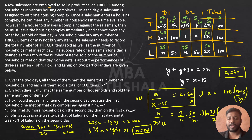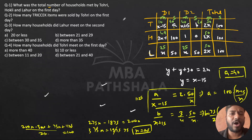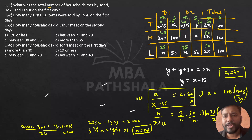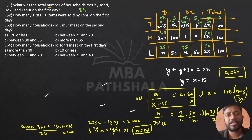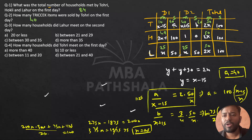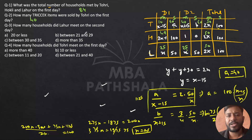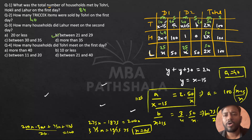Question 1: What was the total number of households met by Tori, Hockley, and Lahur on Day 1? That is 10 + 49 + 25 = 84. Question 2: How many Trisac items were sold by Tori on Day 1? That is 40. Question 3: How many households did Lahur meet on Day 2? Exactly 25, so the answer is option B (range 21–29). Question 4: How many households did Tori meet on Day 1? Exactly 10, so option B.